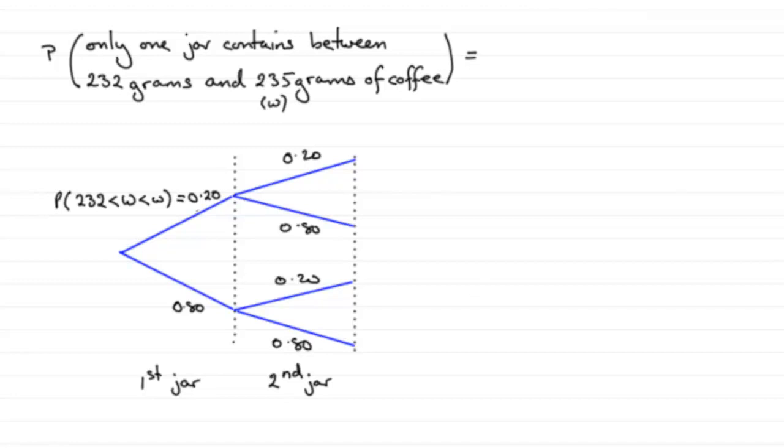So can you see, all we need then is this value, and this value. We get in the range, and then we don't get in the range. Or, a mutually exclusive event, we either don't get in the range, so we want that one, and we're in the range, that one. So we need these two routes through the tree diagram.